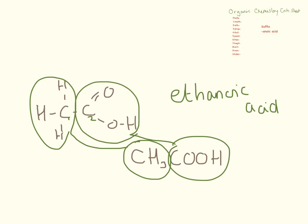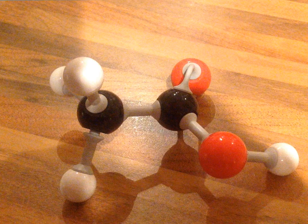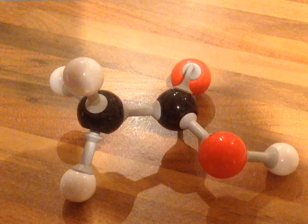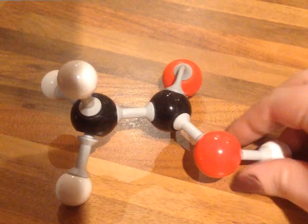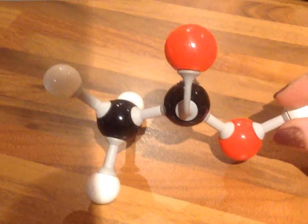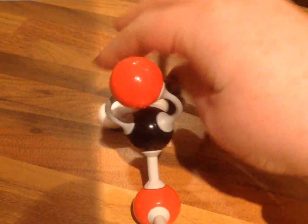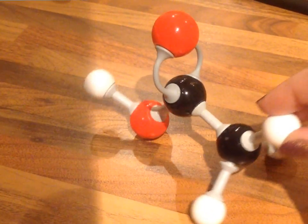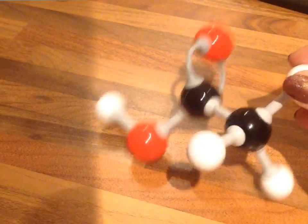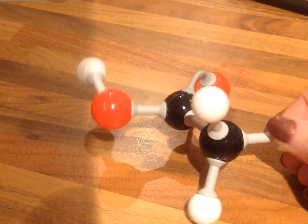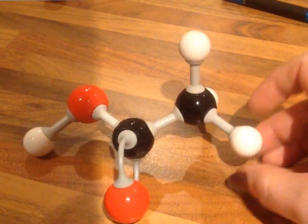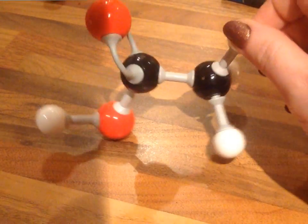Sometimes in class I call the COOH group a 'Q group'. This is the representation using molymods — we have two carbons in black, the hydrogens in white, a double bond to our oxygen, and then a single bond to our oxygen and hydrogen group on the end.